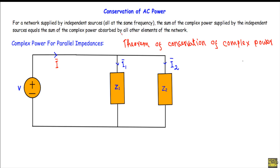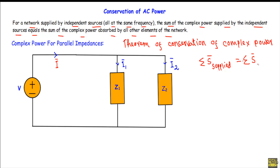For a network with several independent sources all operating at the same frequency, the sum of the complex power supplied by the sources will be equal to the sum of the complex power absorbed by the elements of the network. In mathematical form, the sum of the complex power supplied by the independent sources will be exactly equal to the sum of the complex powers absorbed or delivered to the loads.